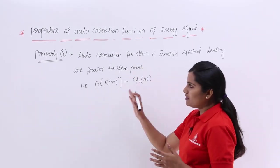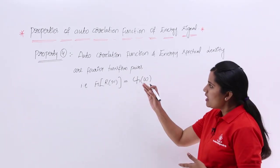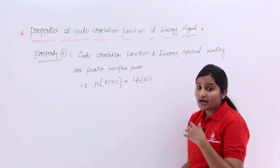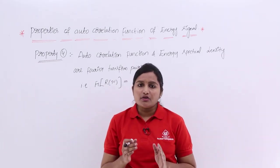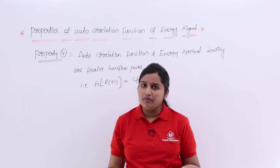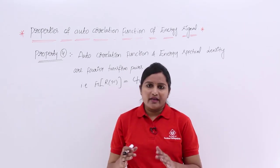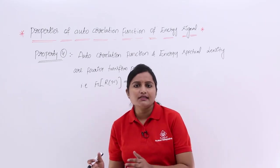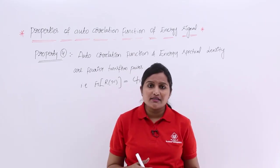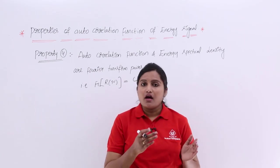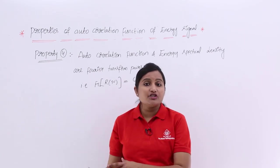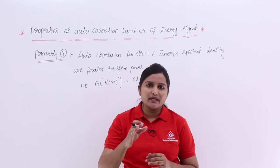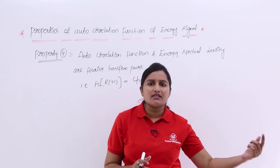We already discussed this property under spectral properties: the autocorrelation function and energy spectral density are Fourier transform pairs. Whenever a signal is a power signal, autocorrelation and power spectral density are Fourier transform pairs. Whenever a signal is an energy signal, autocorrelation function and energy spectral density are Fourier transform pairs. Spectral density is called energy spectral density when the signal is an energy signal.